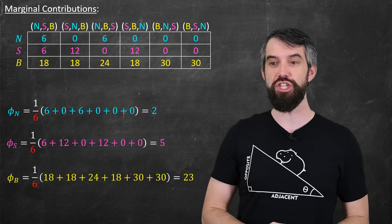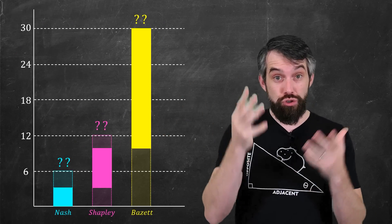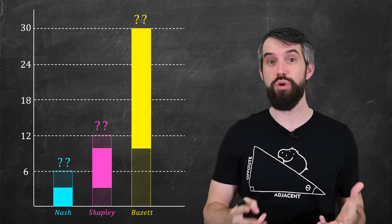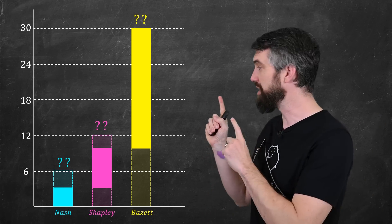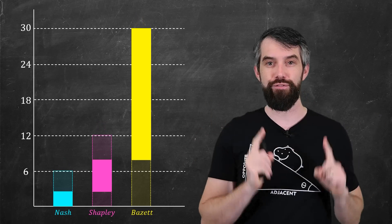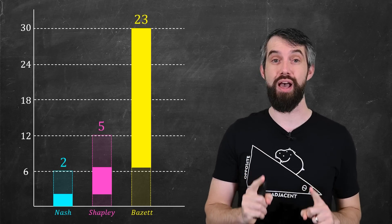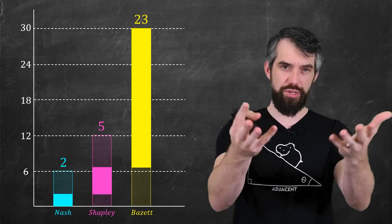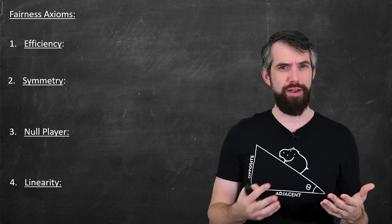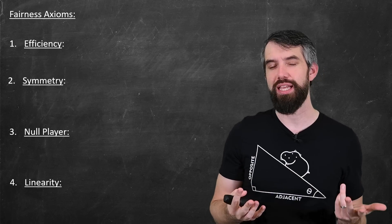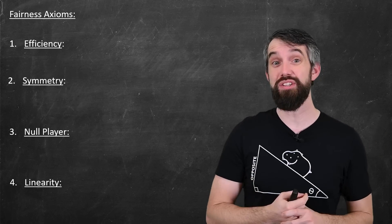Going back to our visualization, we weren't sure what numbers to use. But according to the Shapley value, it should be $2, $5, and $23. So now you might think: how do you know that averaging the marginal contributions is the best way to do this? How do you know that's the only way to do this?